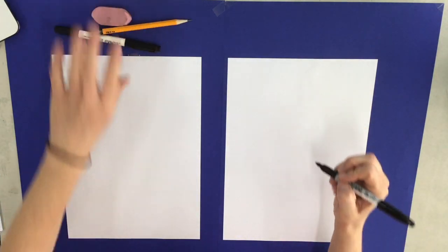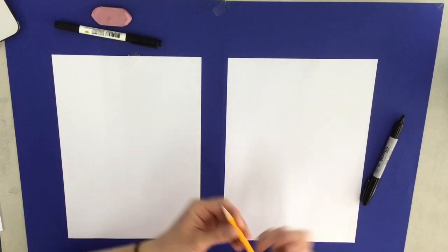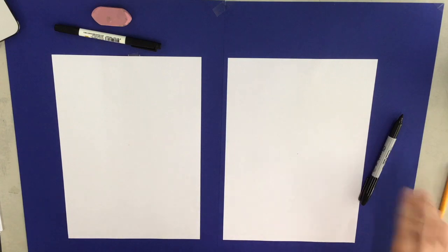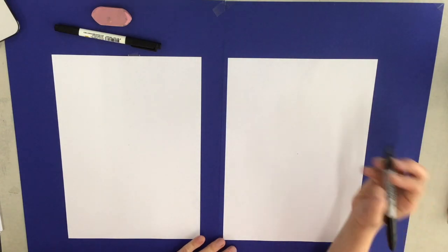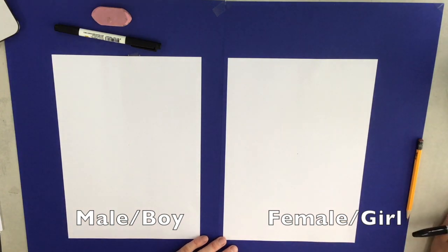So today I am going to be doing a demonstration drawing a male and a female mad scientist. The male mad scientist is going to be on the left and the female will be on the right. I encourage you to start off with a pencil. I am going to draw in marker because it is a little bit easier to see.